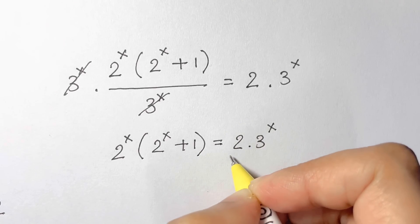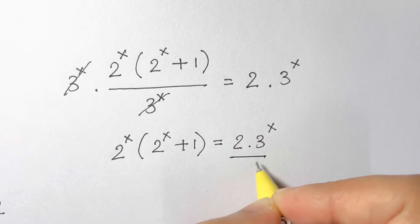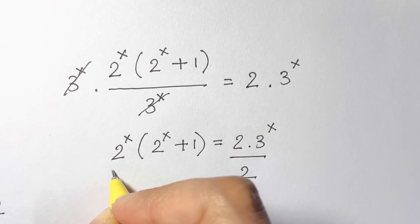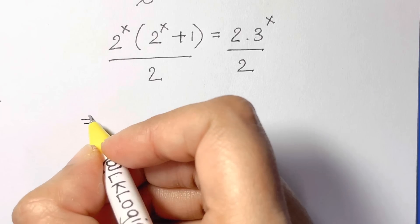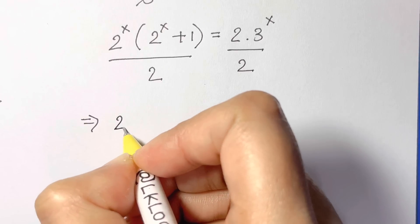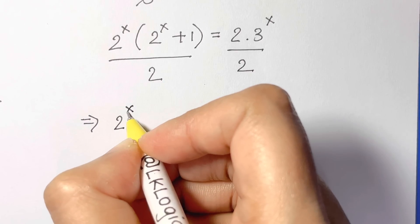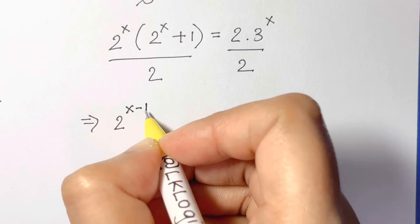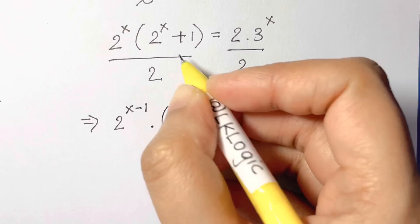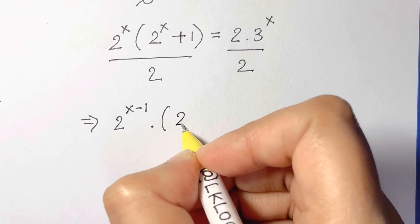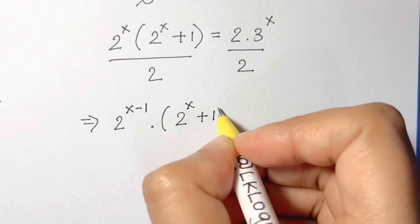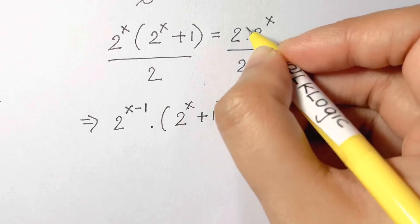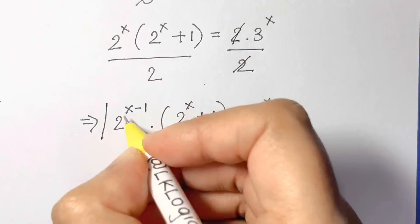Now to eliminate the factor of 2 we divide both sides by 2, so we get 2 to the power of (x minus 1) times (2 to the power of x plus 1) equals 3 to the power of x. Call this equation 1.